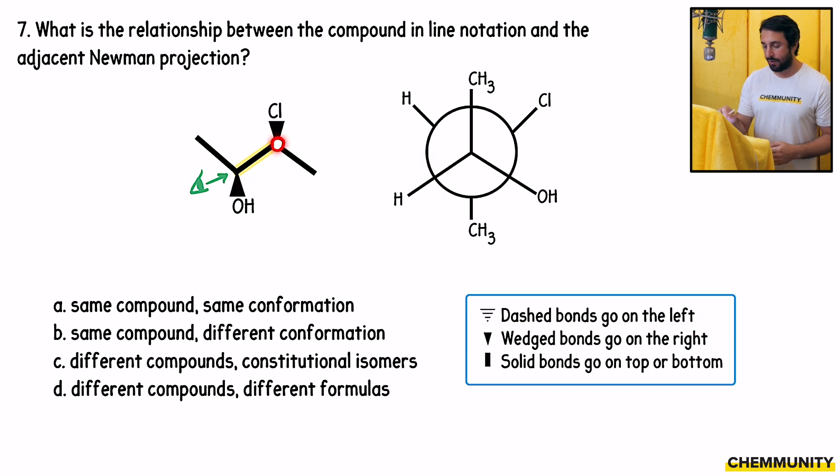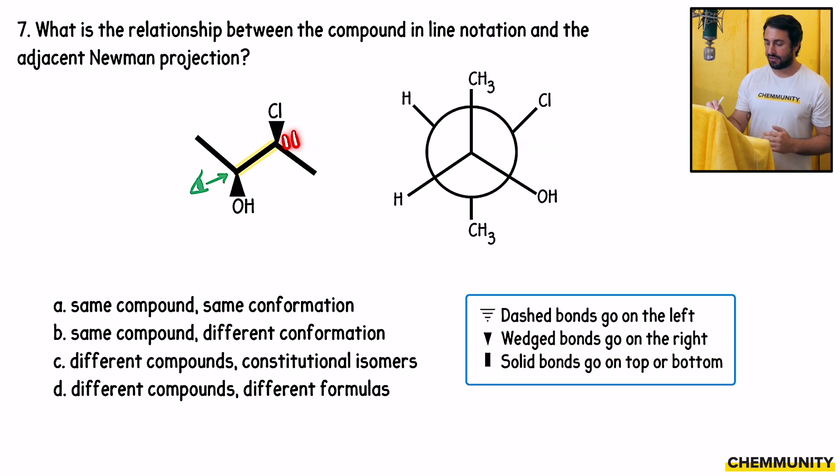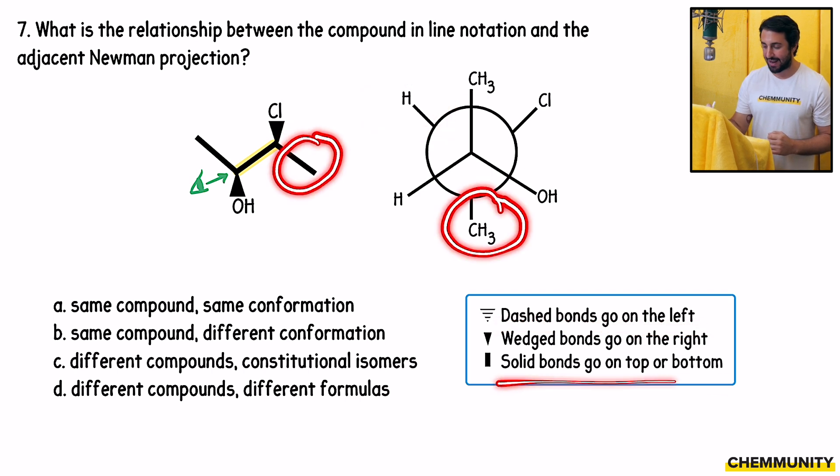Then looking at the back carbon, we have a chlorine atom that is going to be up and to our right. Because again, if we are in the plane of the screen and that chlorine is projecting outwards from the screen, that is going to be up to our right, is going to be pointing to our right there. And then there is an implied hydrogen up and to the left. And then this methyl is pointing directly down.